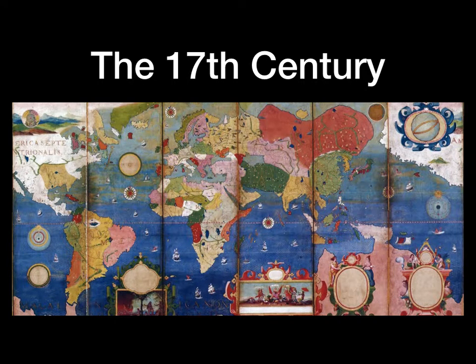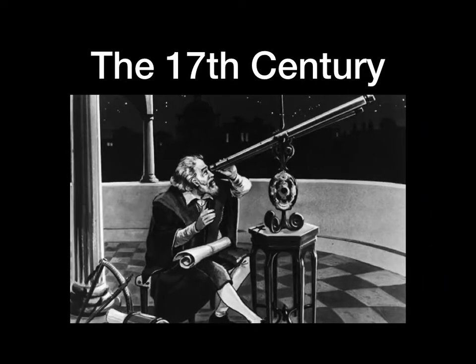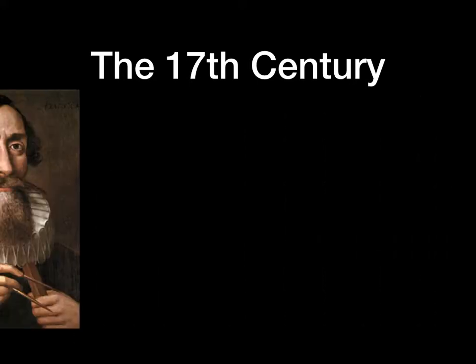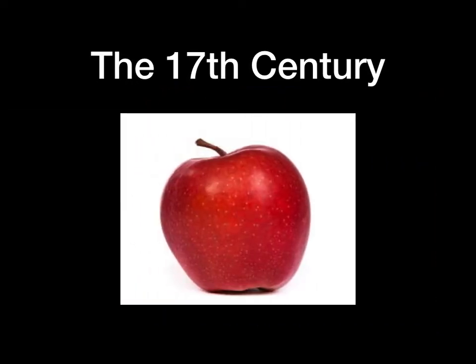The 17th century is referred to as the scientific revolution, or at least it marks the start of it. There are advances in astronomy — for instance, Galileo states that the earth revolves around the sun. There are mathematical advances, thanks to Kepler, and Isaac Newton plays around with gravity during this time.